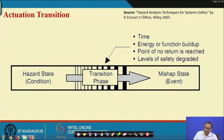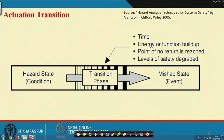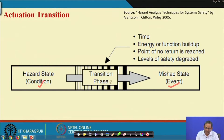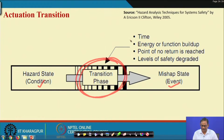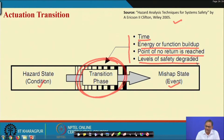The safety engineer's job — and I am repeating this several times — is to prevent the transition from hazardous condition to mishap. That is the biggest issue. As noted in the reference book: the time when energy or function builds up to the point of no return is reached and the level of safety is degraded — only then will a hazard lead to an accident.